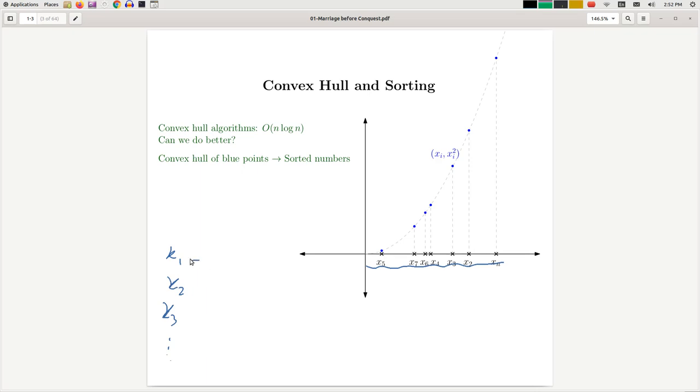You take this value x1 and you replace it with a point (x1, x1 squared). So that would be of course a point in two dimensions. Similarly you replace the value xi with a point (xi, xi squared). The resulting point set is going to be two-dimensional in the sense that it lies on a parabola. It lies on the parabola y equals x squared.